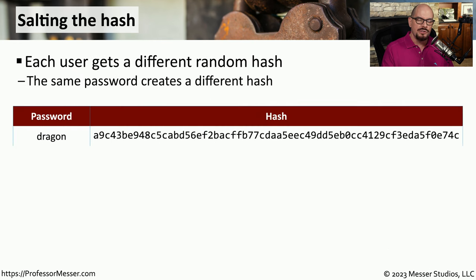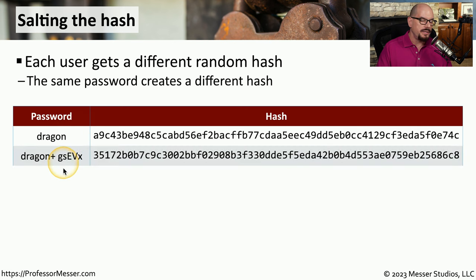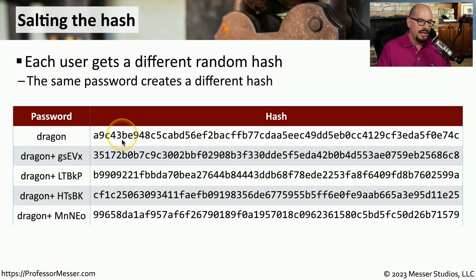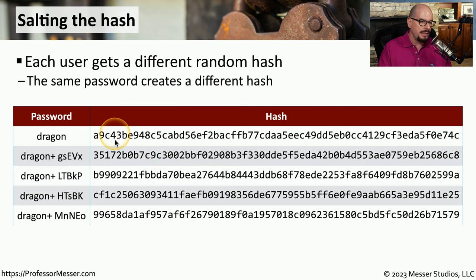Let's take some user passwords, add some salt to each password, and see what the resulting hash looks like. Let's take the password "dragon." If we're not using any salting, this is the hash that results from that password. But now let's add some additional random text onto this password of dragon. As we add different randomization for each one, you can see that we have a very different hash being stored. If someone were to gain access to our hashed database, they would think there were five different passwords being used, when in reality there's a single password with a number of different salts added to it.